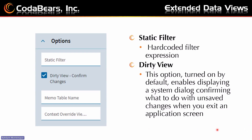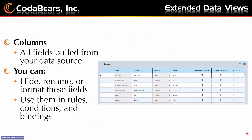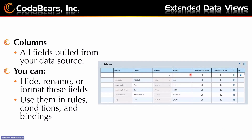It also notes memo, table name, and context override view. Moving on to the next section — this is where we have our Columns. This is where all the column names of the data you're pulling in are going to go. Columns are the fields you pull from your data source, and you can hide, rename, or format these fields. These are the fields you're going to use in your rules, conditions, and bindings for the elements in your Application Studio. If you press on that little button, you're able to add your columns.